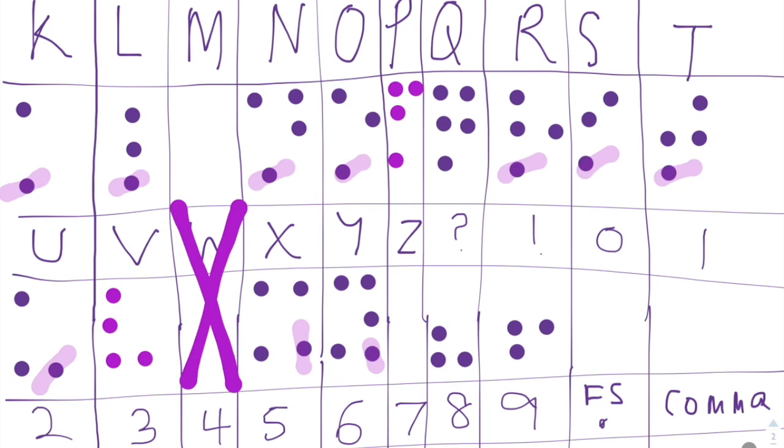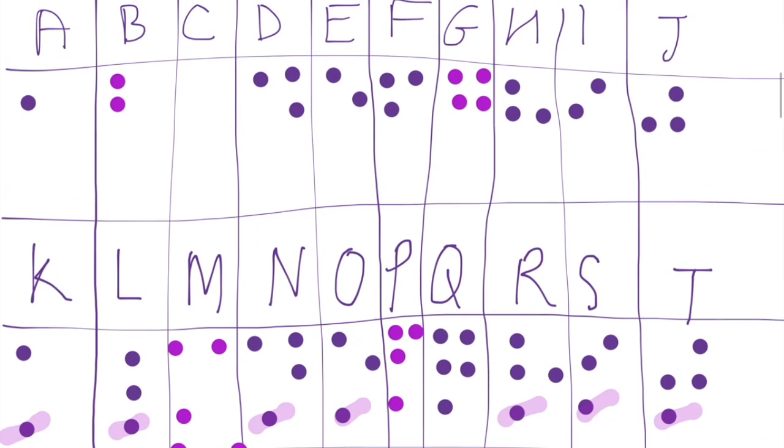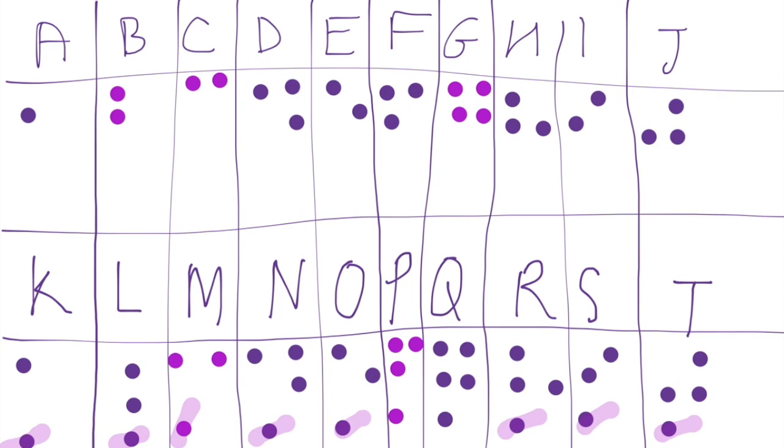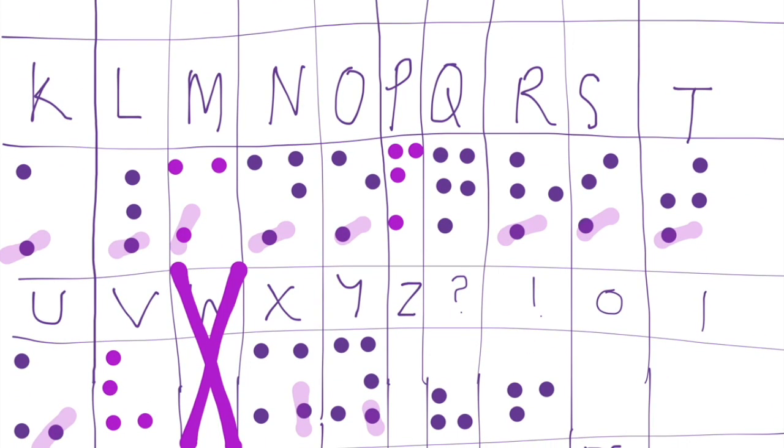Since we now know M, we can work out C. To move from the second row to the first row, we get rid of the dot in the bottom left corner, so C is represented by two dots. Now we have the representations of A through J, K through T, U, V, X, and Y. We still don't have Z, but since N maps to Y, O most likely maps to Z, which means Z is represented by four dots.